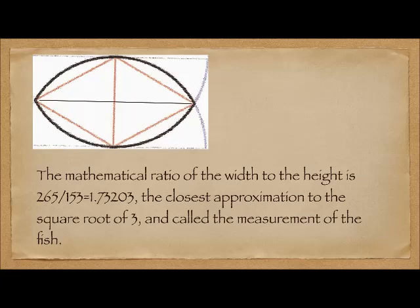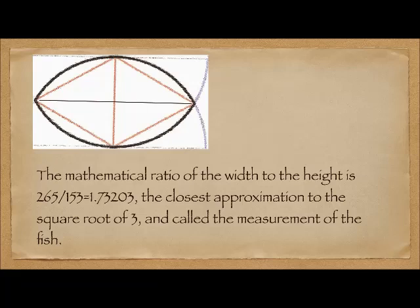So we have this almond shape. Somebody extended the lines to make the little traditional fish symbol. How is this related to the number 153? By geometry, the ratio of the width of this shape to the height is 265 divided by 153, which yields 1.73203 — the closest approximation to the square root of 3. Therefore, this is called the measurement of the fish.